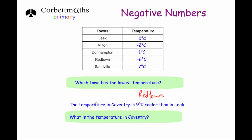The last question says the temperature in Coventry is nine degrees Celsius cooler than in Leek. In Leek the temperature is five, so we're going to do five subtract nine. If we subtract five from five that brings us to zero, and we've got another four to subtract. So our answer would be minus four degrees Celsius.